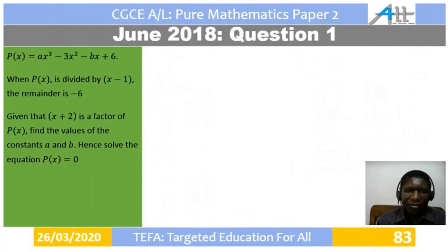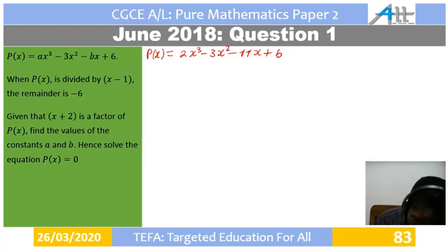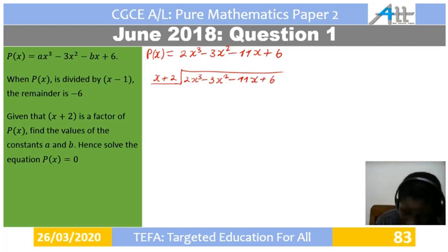Knowing the values of a and b, we can now solve the equation P of x equals 0. So P of x becomes 2x cubed minus 3x squared minus 11x plus 6. We use the known factor x plus 2 and divide P of x by x plus 2 to factorize P of x completely.